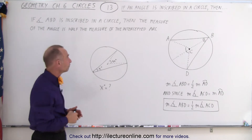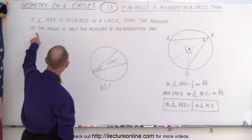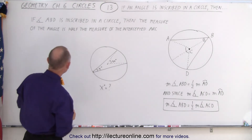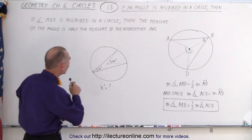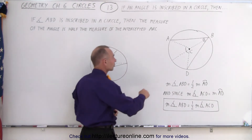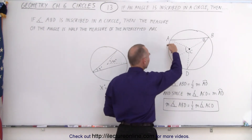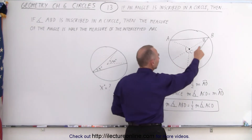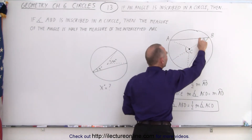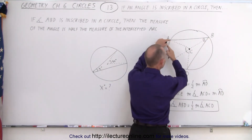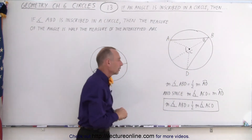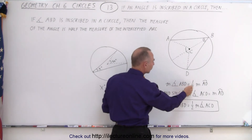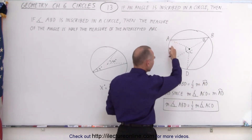So what can we conclude? Here it says, if the angle ABD is inscribed in a circle, then the measure of the angle is half the measure of the intercepted arc. So here we can see the intercepted arc, and that means that this measure here must be half the measure of the intercepted arc — the measure of angle ABD is half the measure of the intercepted arc from A to D.